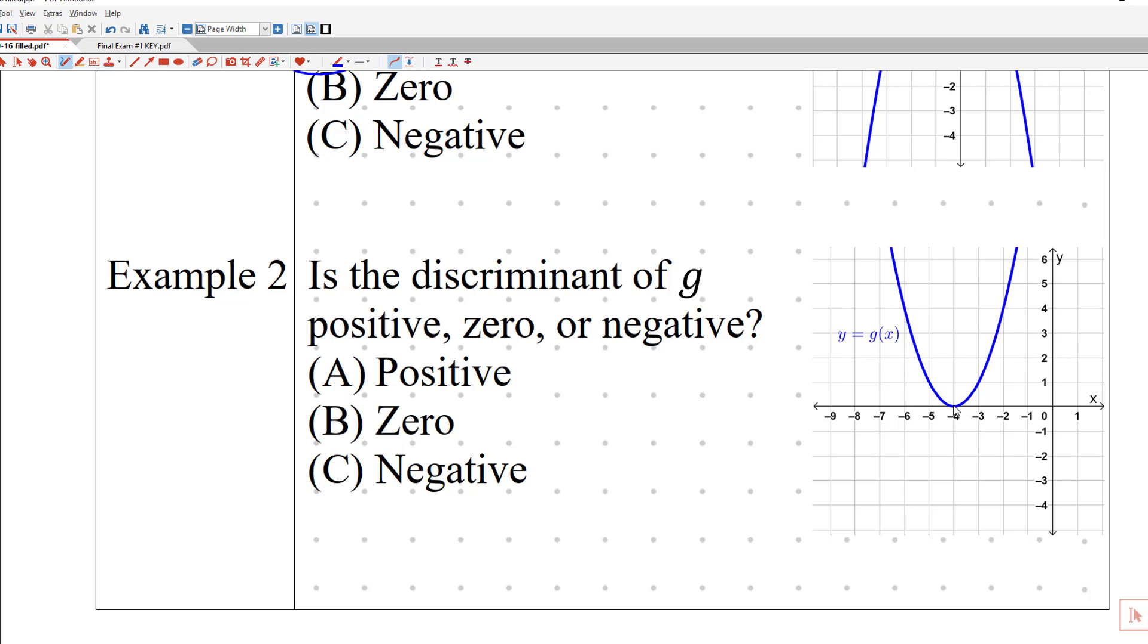So if it intersects at one spot, that means I have to do plus or minus zero. So the discriminant is zero. Again, it doesn't matter if it's facing up or down.